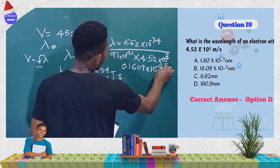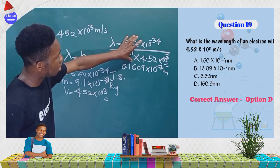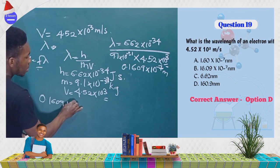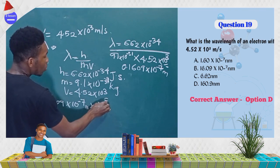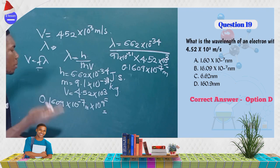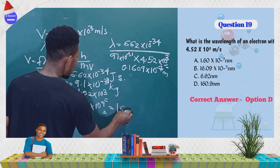The result is 0.1609 × 10⁻⁷ meters. To convert from meters to nanometers, multiply by 10⁹. Note: to convert from nanometers back to meters, you divide by 10⁹. So multiplying gives us 160.9 nanometers.